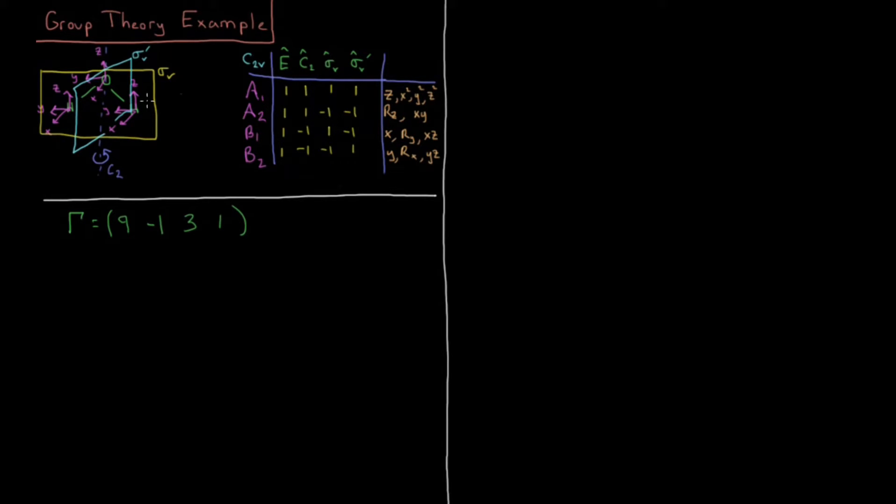Okay, we've got to determine the coefficients for all of these various EREPs. So we have coefficient of A1 equals, from our previous formulas, 1 over 4, the order of the group is 4. That's from the sum of the squares of the EREPs, or the total number of symmetry operations. So our denominator is 4. 1 over 4 of 9 times 1 for A1, minus 1 times 1, plus 3 times 1, plus 1 times 1, equals 9 minus 8, 11, 12, divided by 4 is 3. So there's a character of 3 for A1.